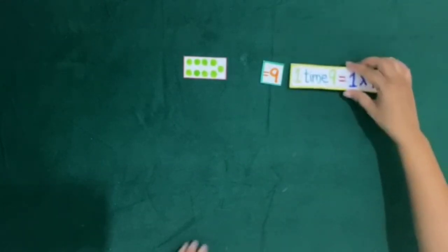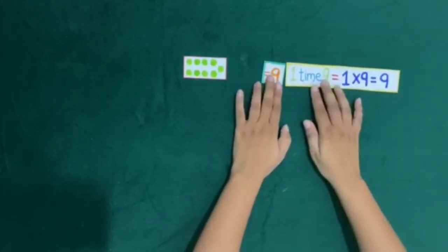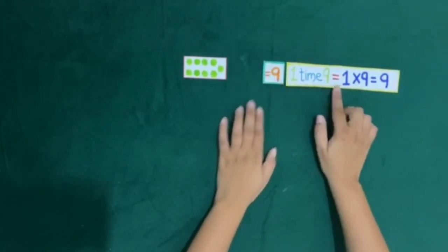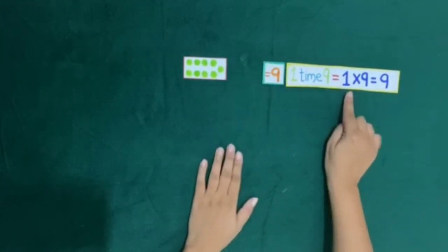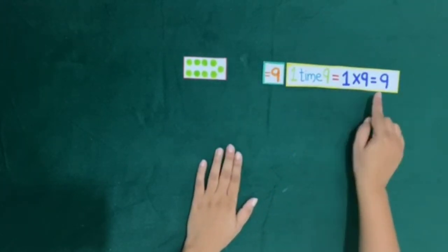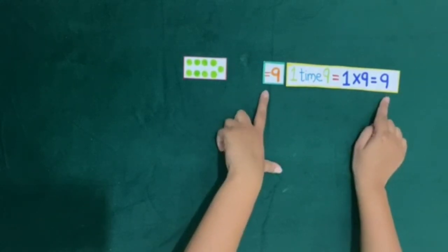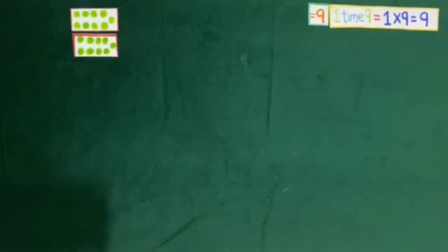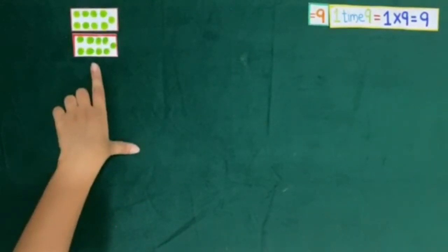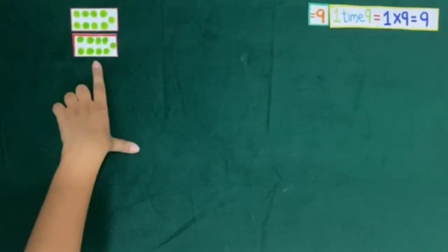So 1 times 9 is equal to 1 into 9. Now we have one card of 9 dots.